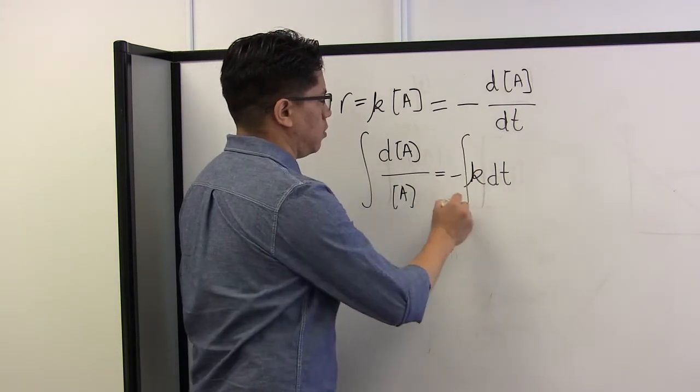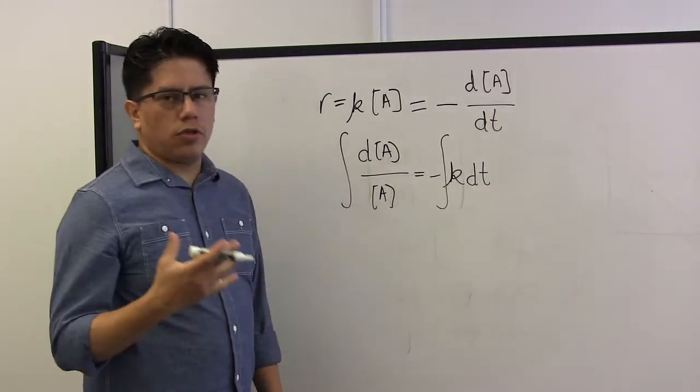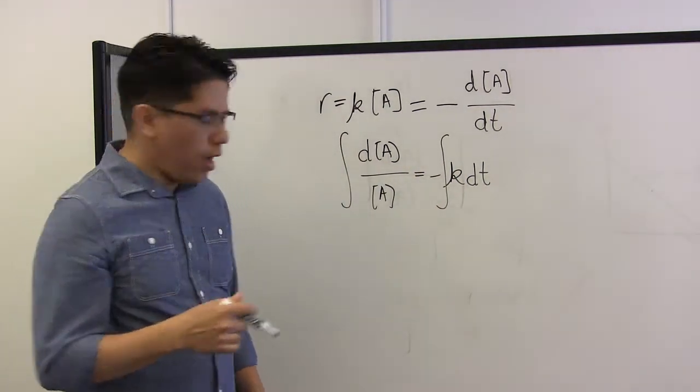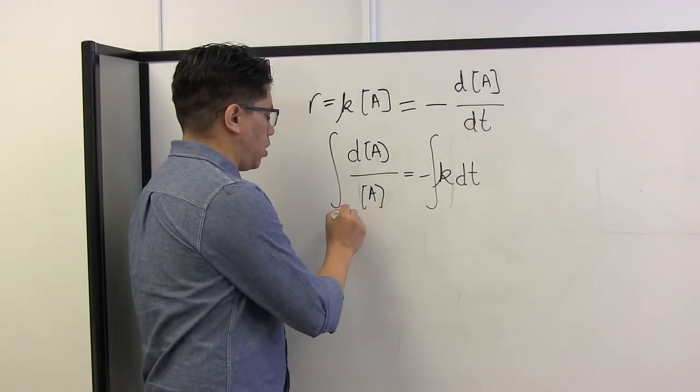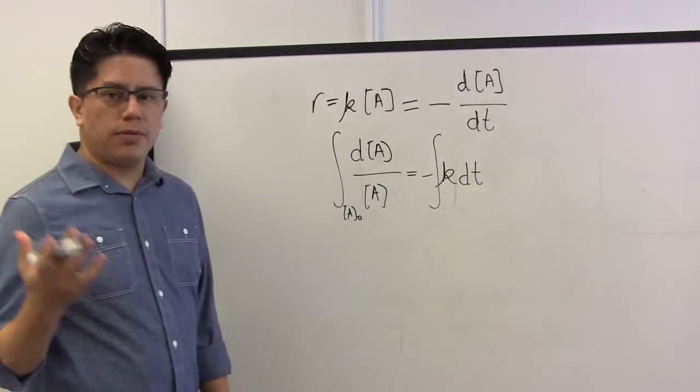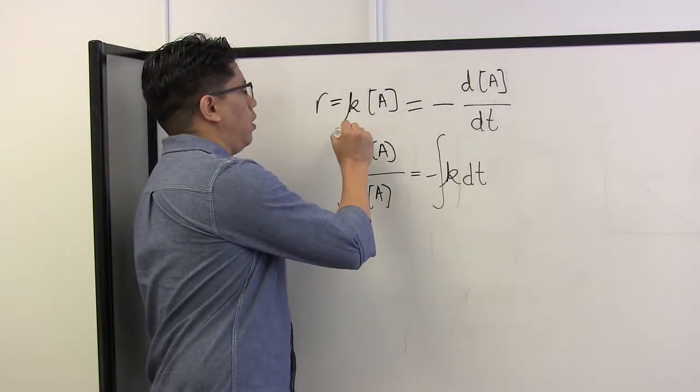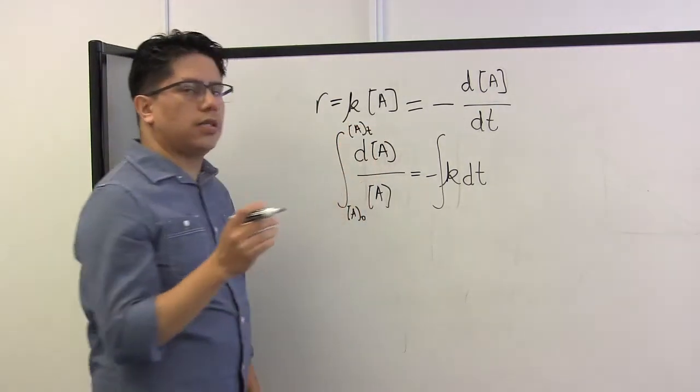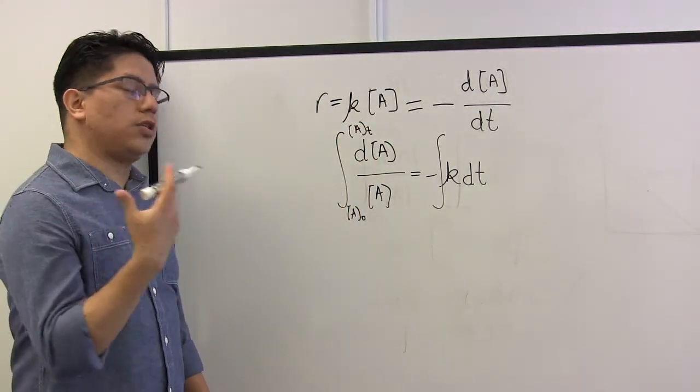And the two limits or the two boundaries that I'm interested in are the concentration at time zero, which means when the water leaves the treatment plant, and the concentration at a certain time t where I'm interested in whether there is enough residual disinfectant.